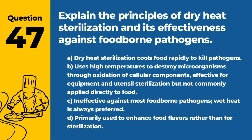Question 47. Explain the principles of dry heat sterilization and its effectiveness against foodborne pathogens. a. Dry heat sterilization cools food rapidly to kill pathogens. b. Uses high temperatures to destroy microorganisms through oxidation of cellular components, effective for equipment and utensil sterilization, but not commonly applied directly to food. c. Ineffective against most foodborne pathogens; wet heat is always preferred. d. Primarily used to enhance food flavors rather than for sterilization. Answer: b. Uses high temperatures to destroy microorganisms through oxidation of cellular components, effective for equipment and utensil sterilization, but not commonly applied directly to food. Dry heat sterilization is a critical control point in some food processing environments.